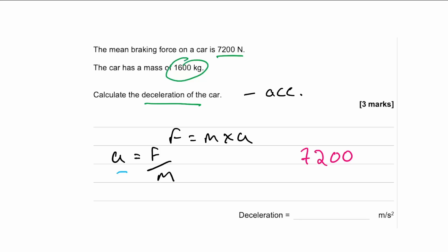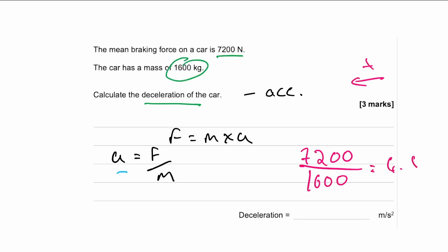Because this is a braking force, if positive is defined as forward, the force is negative. Either way, dividing 7,200 newtons by 1,600 kilograms gives 4.5. So the deceleration is 4.5 meters per second squared, or equivalently the acceleration is minus 4.5 meters per second squared if forward is positive.